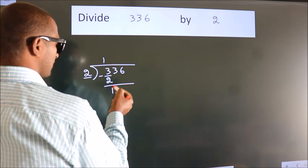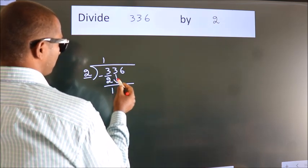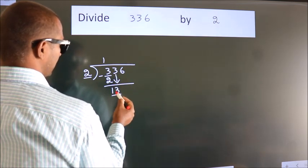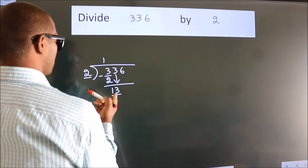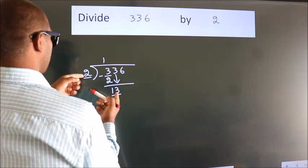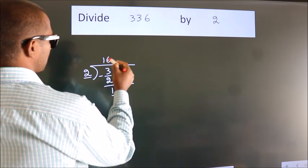After this, bring down the beside number. So 3 down. So 13. A number close to 13 in the 2 table is 2 sixes are 12.